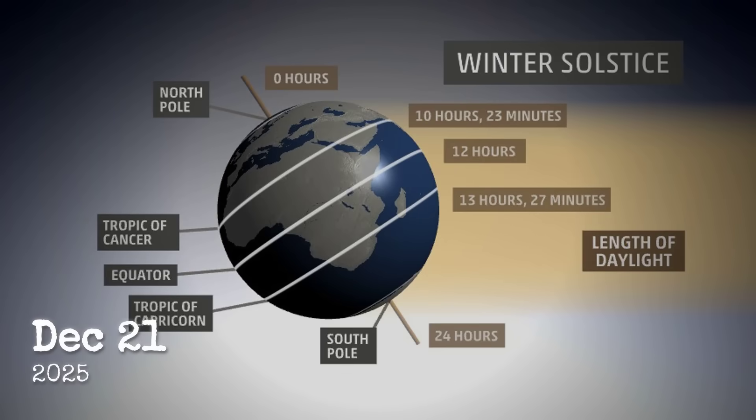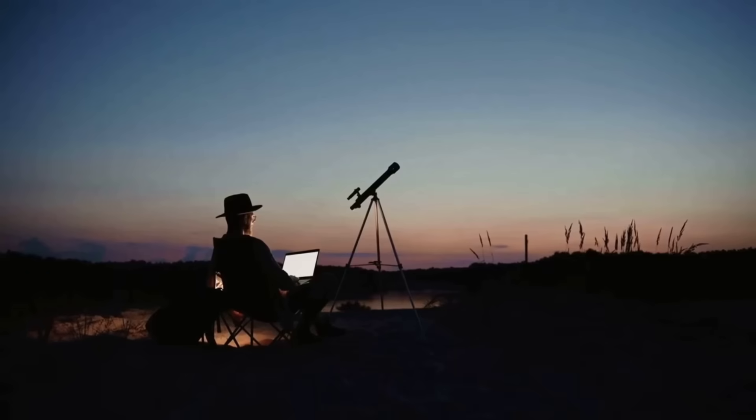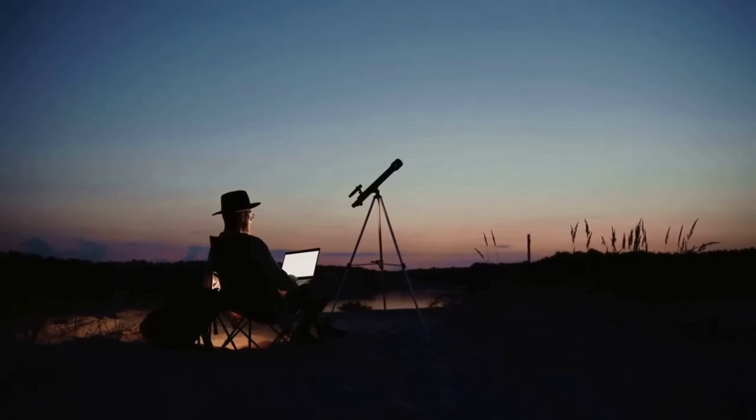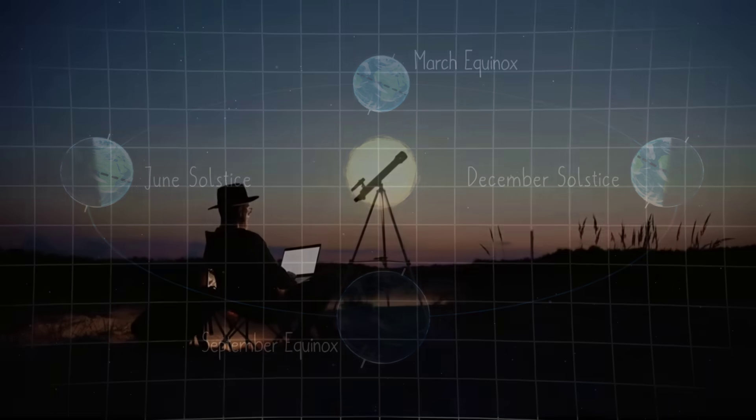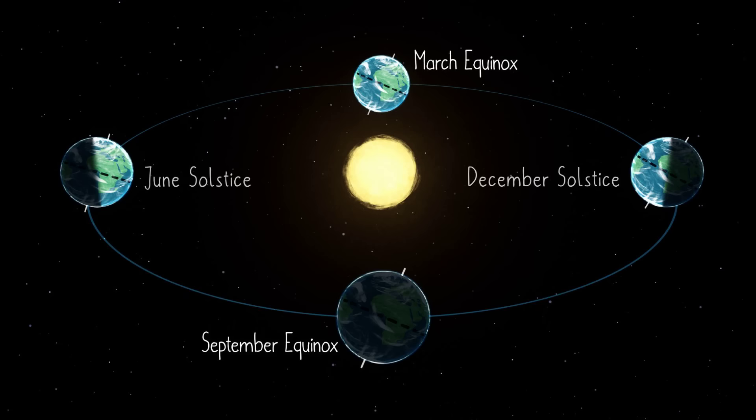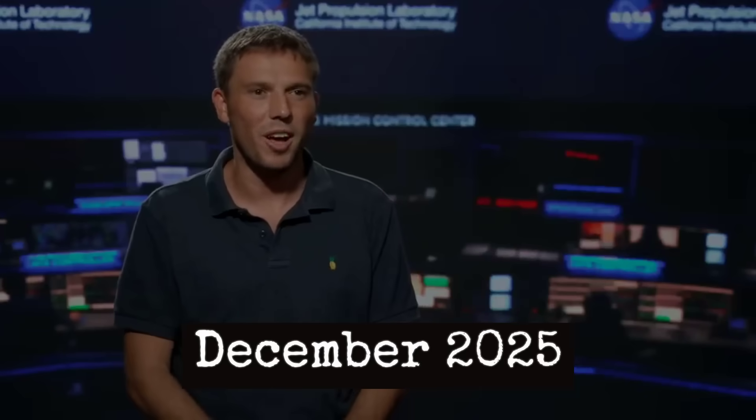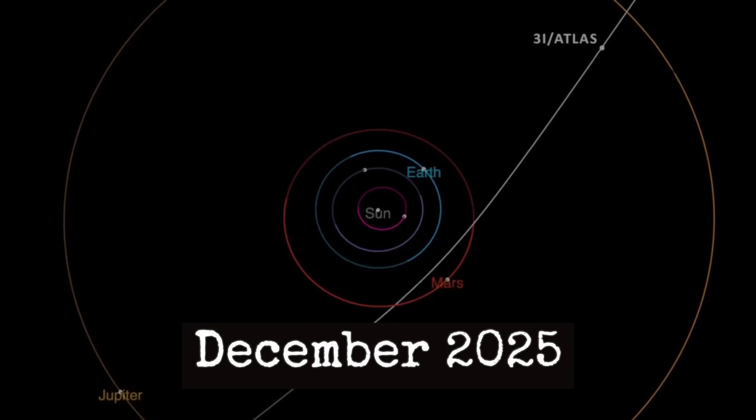Then, on December 21st, we have the December solstice, the shortest day of the year in the Northern Hemisphere. Some people have noted the synchronicity of 3I/Atlas' closest approach to Earth coinciding almost exactly with the solstice, though this is likely just coincidence rather than any meaningful connection.